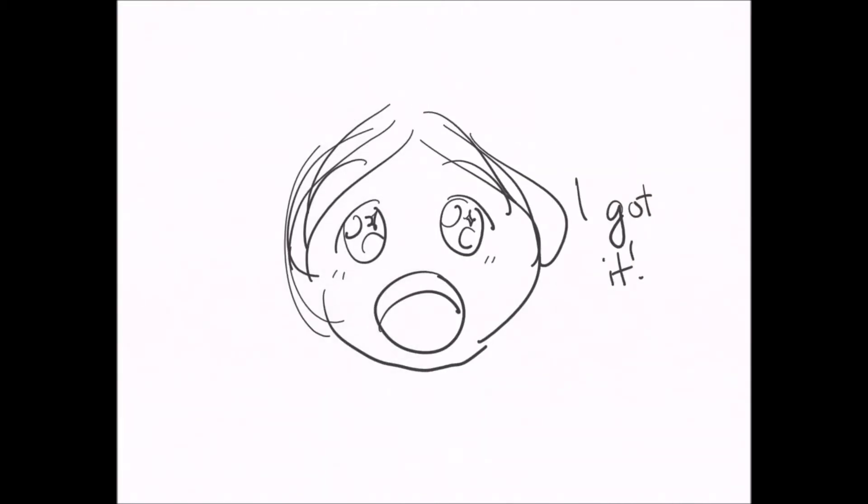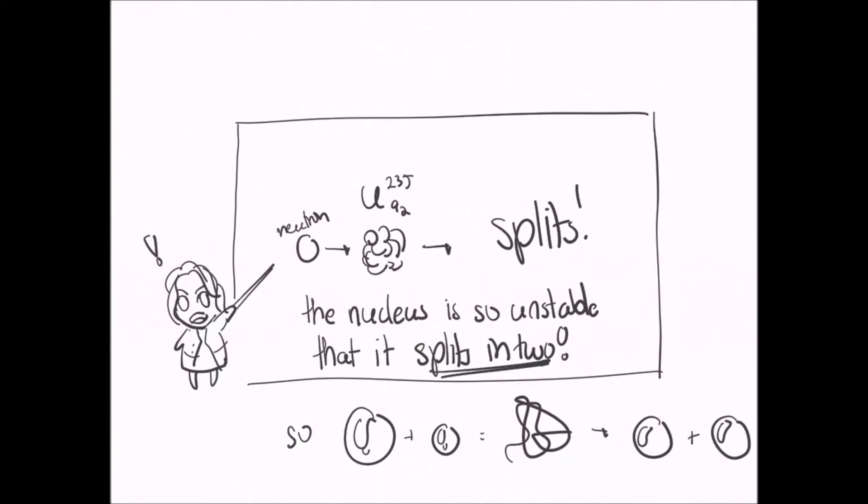But I got it. I found that the uranium nuclei were actually breaking into smaller nuclei by nuclear fission. I realized that the extra neutron wasn't sticking to the uranium, but smashing it into smaller pieces. The nucleus was so unstable that it had to split into two smaller water droplets, basically. Barium.